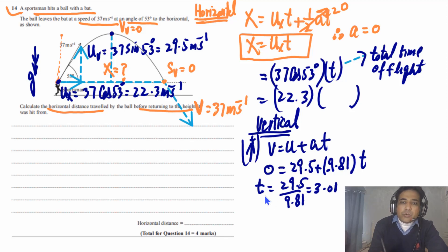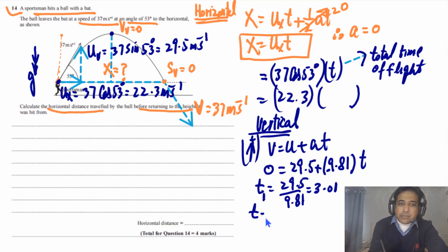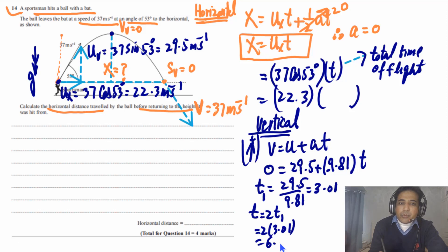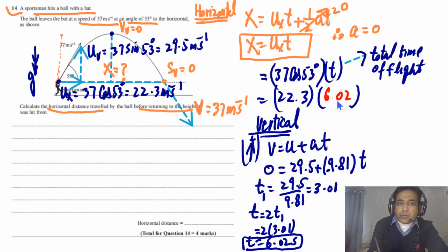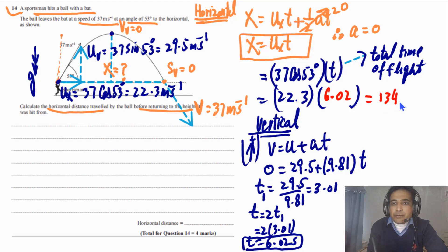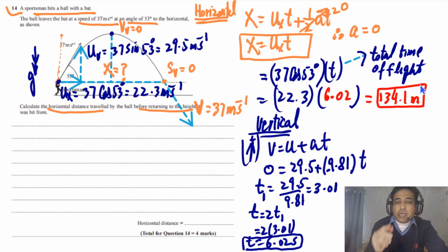Solving that gives t₁ = 3.01 s. The total time of flight t = 2 × t₁ = 2 × 3.01 = 6.02 s. Now substituting into our horizontal equation: x = 22.3 × 6.02 = 134.1 meters. This is our final answer.